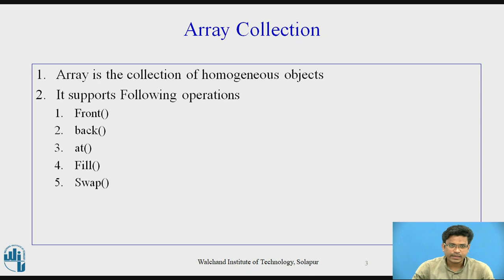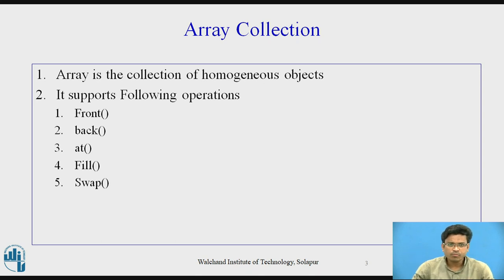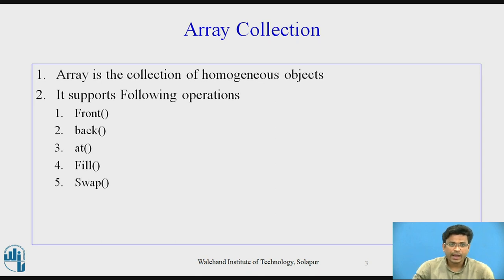An array is a collection of homogeneous objects — it stores the same data type values. It supports the following operations: we can perform different operations like front, back, at, fill, and swap.